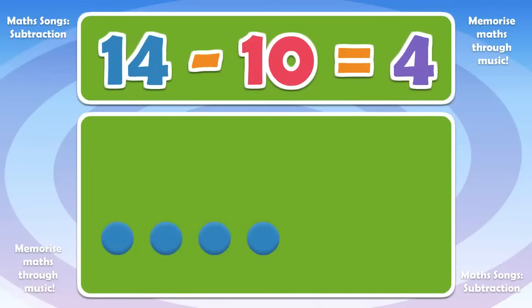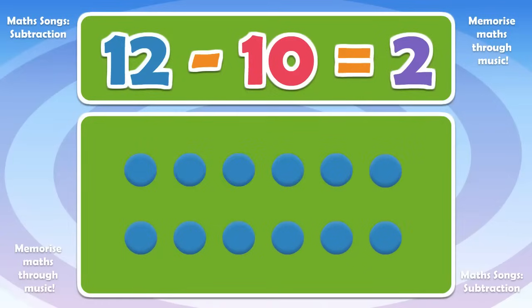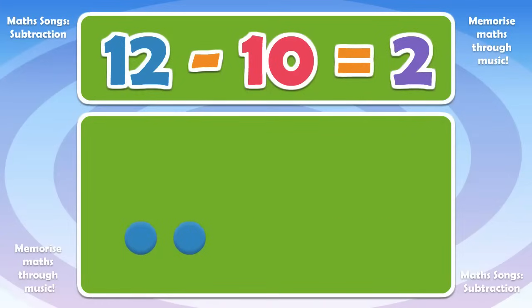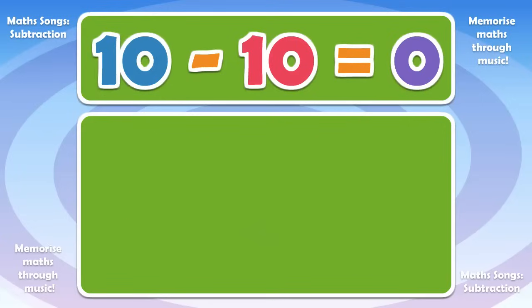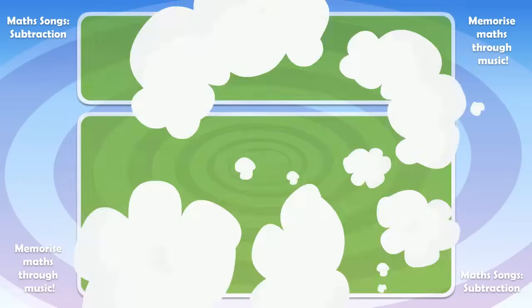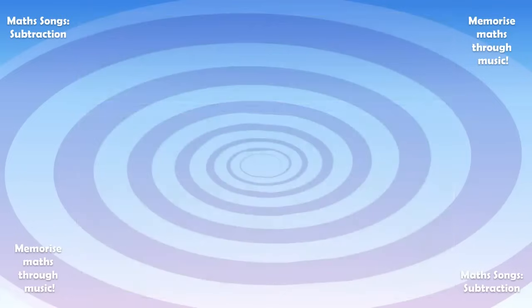12 minus 10 is 2. 10 minus 10 is 0. 30 minus 10 is 12. 10 minus 10 is 5. 11 minus 10 is 4. 21 minus 10 is 5.